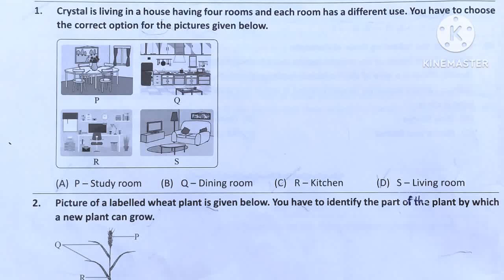Option C: R is kitchen — but R is not a kitchen, it is a study room. Option D: S is living room — and S is living room. So the answer will be Option D.